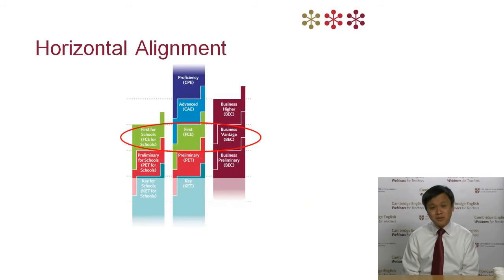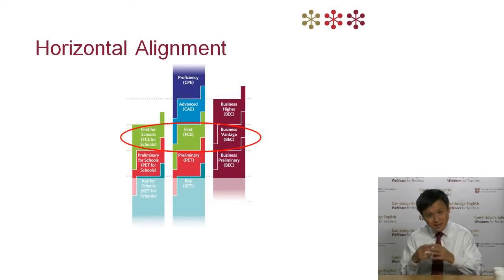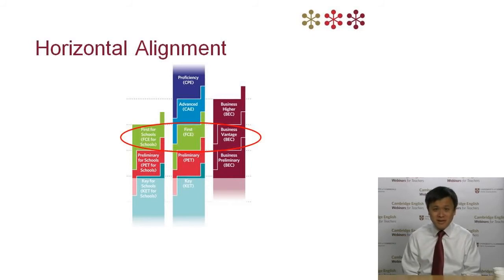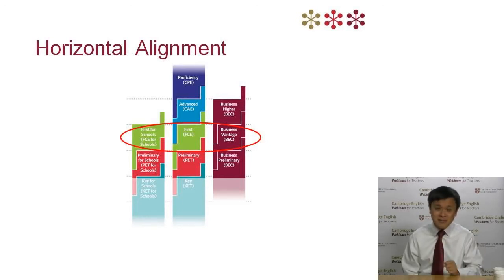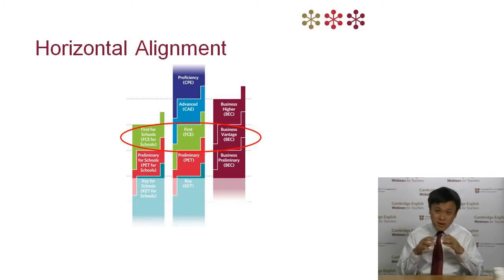Let me move on to another reason why we updated the writing mark scheme: to create alignment horizontally among our exams at the same level, as shown in the illustration. This gives you some insight into why the scale descriptors are worded the way they are. Because we have different exams at the same level with different specific features, the mark scheme has to work across all of these exams.